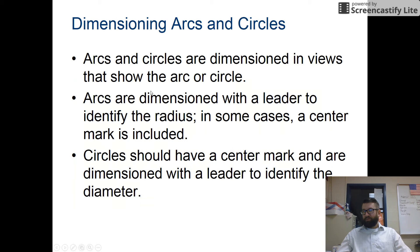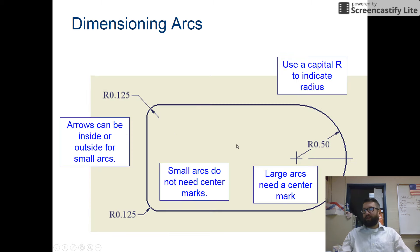Arcs and circles, dimensioned in views that show the arcs and circles. We have a leader. Sometimes you have a center mark. Circles should have a center mark. Dimension with a leader to identify the diameter. A center mark is just a cross, as you can see right here. Capital R indicates a radius. Small arcs do not need center marks. So, we'll stop there and we'll pick it up with our next part two of our dimensioning presentation.